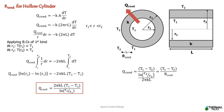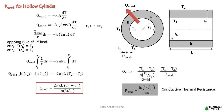From the concept of thermal resistance, heat transfer equals temperature difference divided by thermal resistance. Here the conductive thermal resistance is ln(R2/R1) divided by 2πKL.